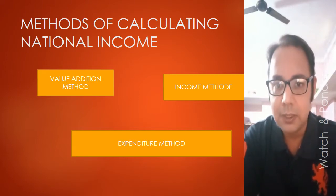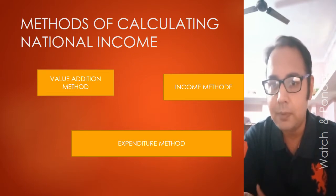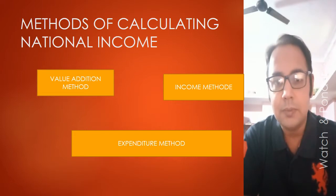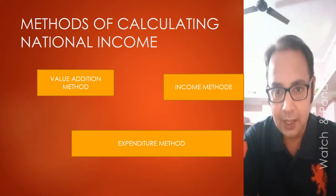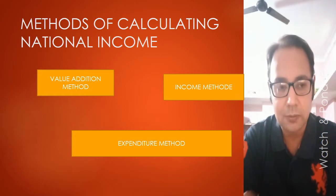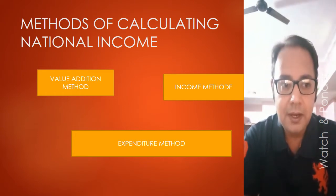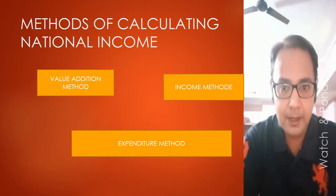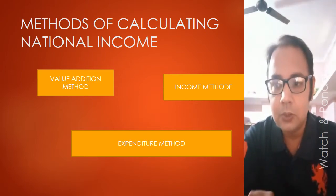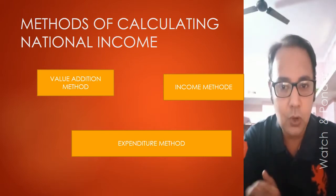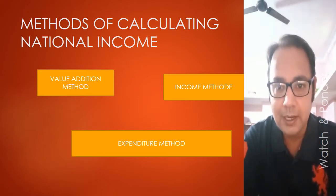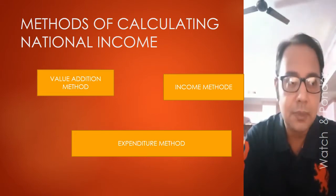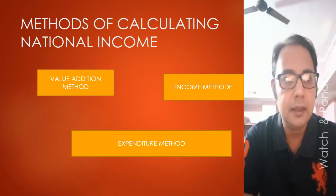The third method is the Expenditure Method. If you want to start a company, you invest first — this is called an expenditure fund. One important thing to remember: someone's expenditure is someone else's income. If we go to a shop and buy something, we pay money — that is our expenditure, but it is income for the shopkeeper. So these three methods allow us to calculate national income easily.